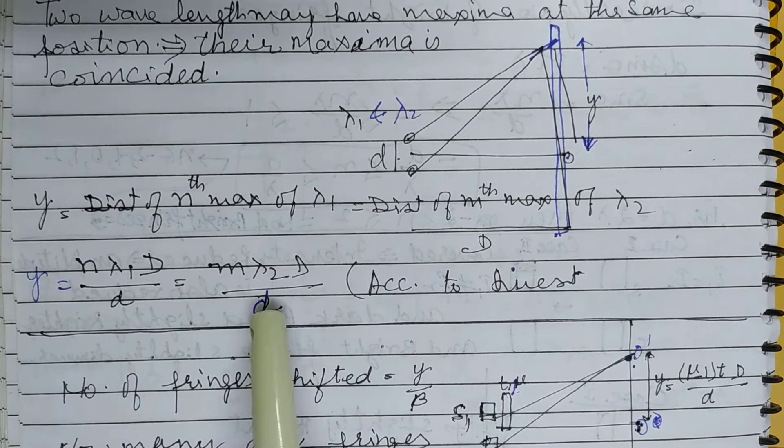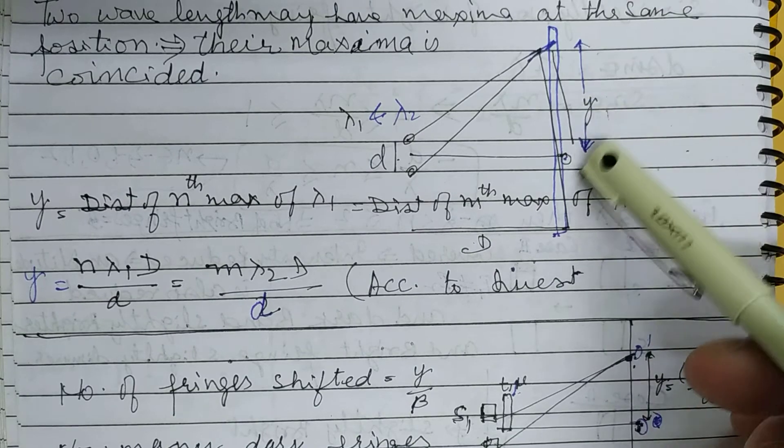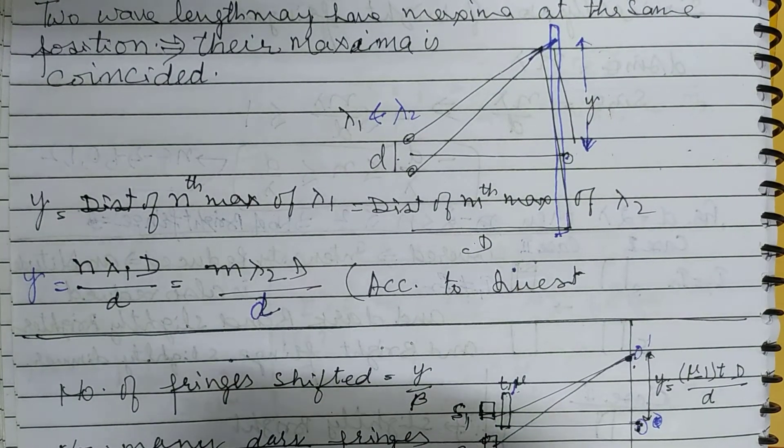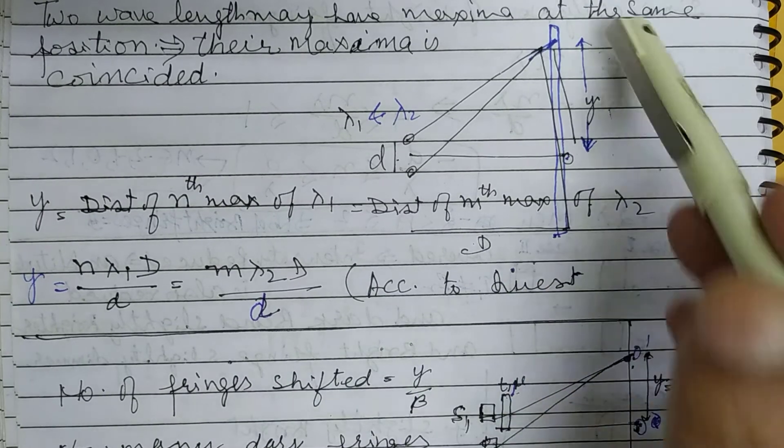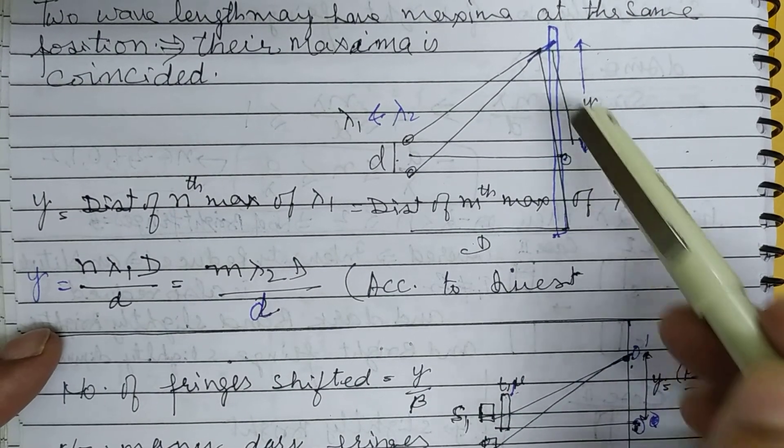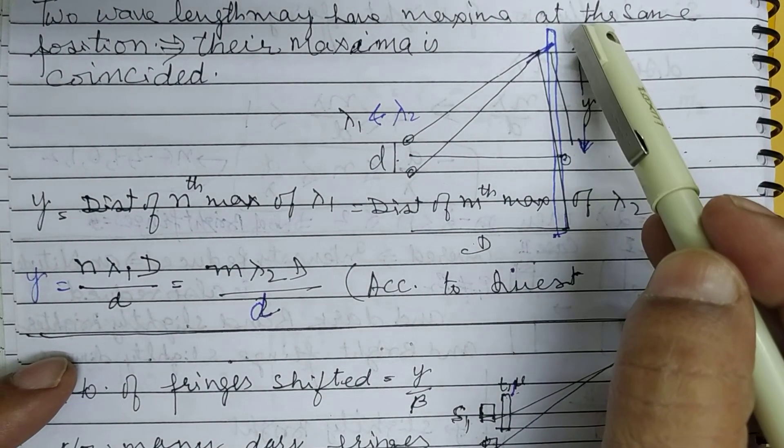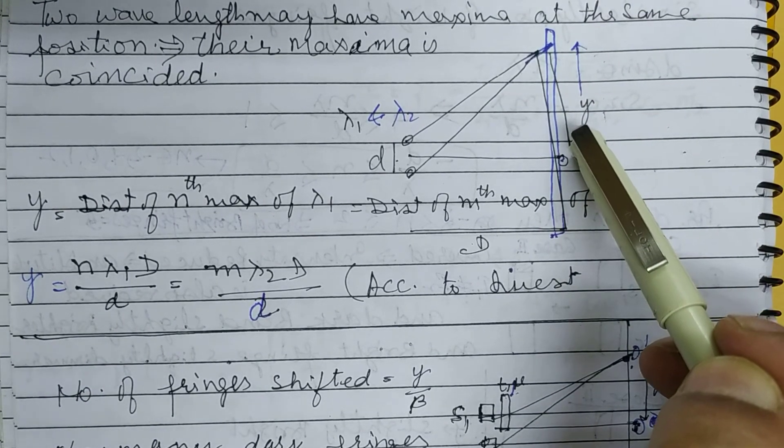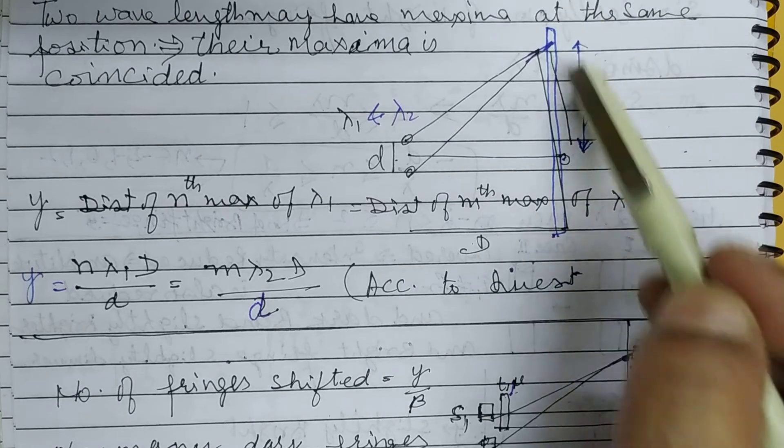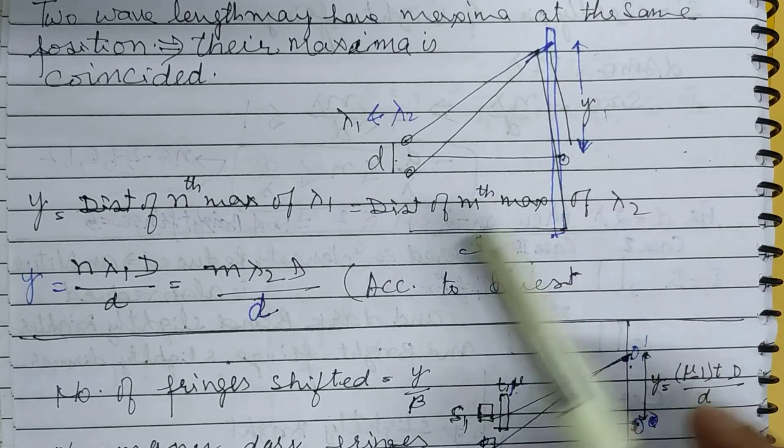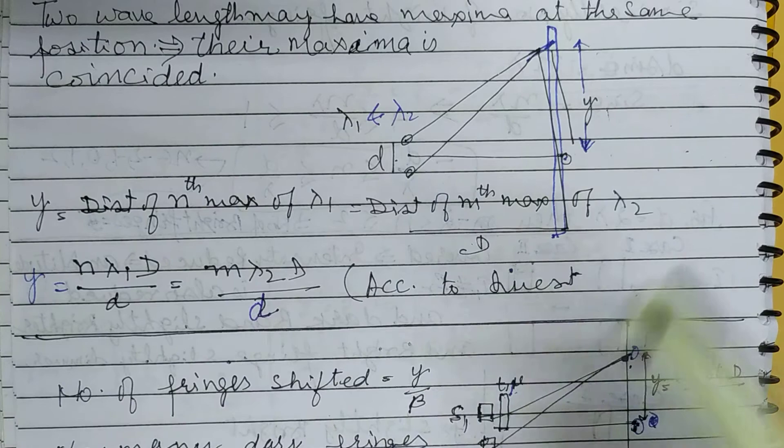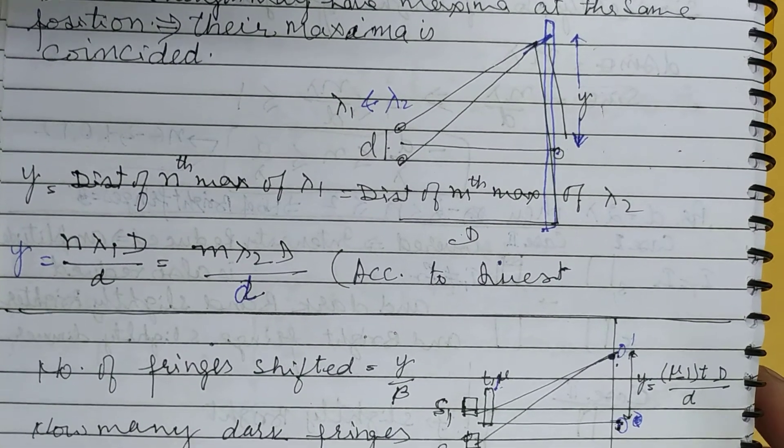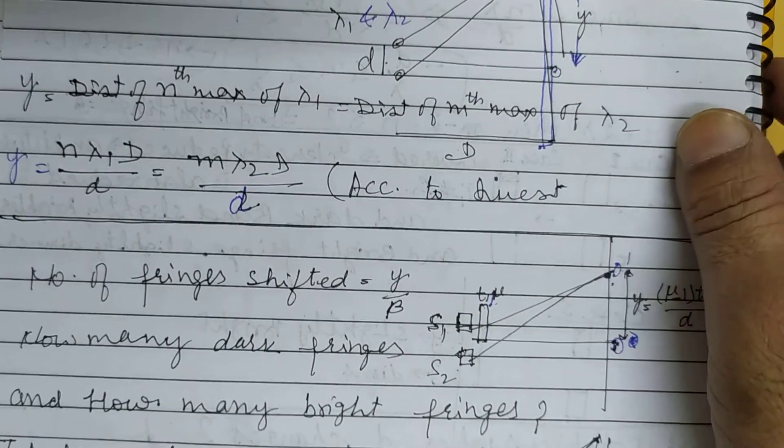It may also be that for one wave it's the nth bright fringe, but for the second wave it is the mth dark fringe. Then the dark fringe distance formula you will write here and equate both. That's your answer. Next question please.